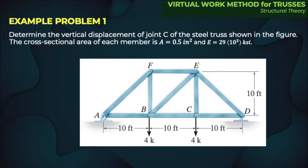The problem is: determine the vertical displacement of joint C of the steel truss shown in the figure. The cross-sectional area of each member is 0.5 square inches and the modulus of elasticity is equal to 29,000 KSI. The truss is simply supported and is subjected to two concentrated loads equal to four kips at joints B and C.